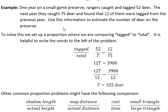One year on a small game preserve, rangers caught and tagged 52 deer. The next year they caught 75 deer and found that 12 of them were tagged from the previous year. Use this information to estimate the number of deer on the preserve. So to solve this proportion, we're actually comparing the tagged deer to the total deer.